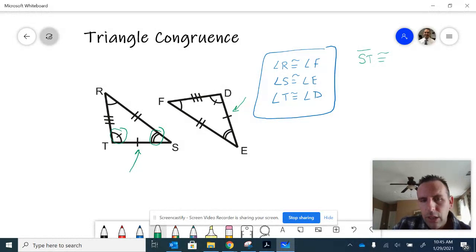If I look at the second triangle, notice if S goes first, which one has that same marking? E does. So when I put my congruent statement, I have to put E first, and then S-T would be like E and then D.